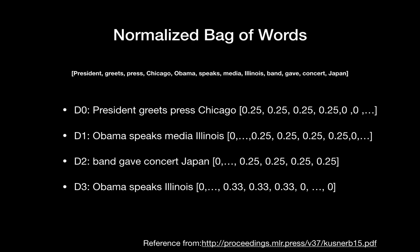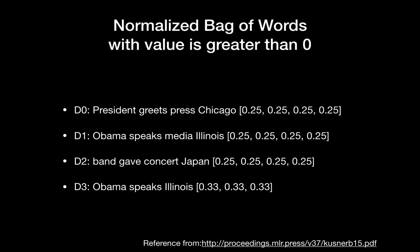For the last document, 'Obama speaks Illinois', we have three words total and just one 'Obama', so one over three is 0.33. Since we don't need zero values, I just show values that are non-zero here.